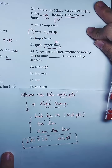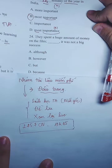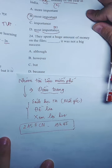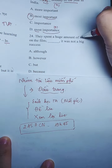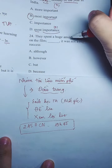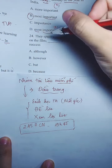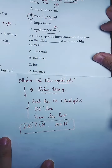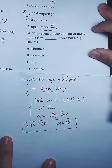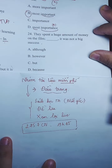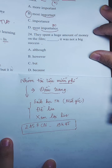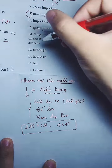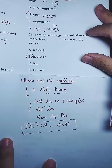Câu 24 — liên từ. Liên từ phải dịch nghĩa: 'Họ đã dành một khoản tiền rất lớn vào bộ phim... nhưng nó không có thành công vang dội.' Chỗ này điền 'tuy nhiên' — 'however'. Đến câu này thì nhiều bạn làm đúng rồi.